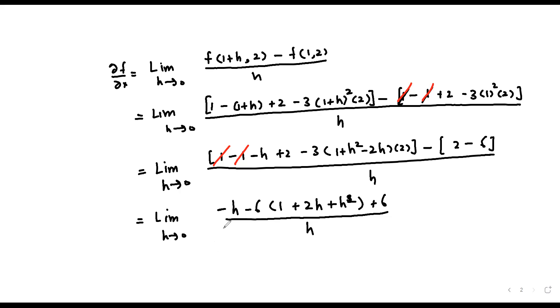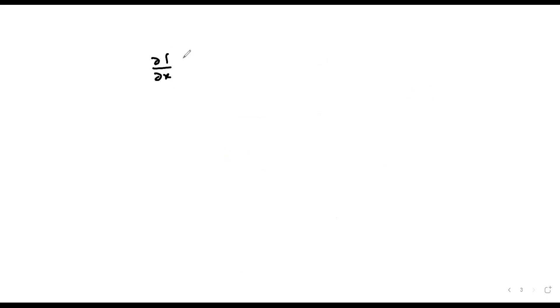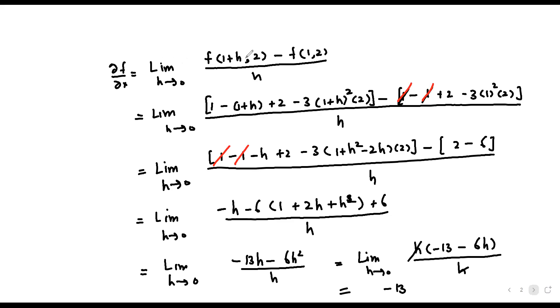Now applying the limit: we factor h from the numerator to get h(−13 − 6h) divided by h. The h cancels, and when we apply the limit as h approaches 0, we get −13. So ∂f/∂x at point (1, 2) equals −13.